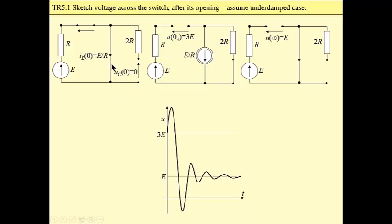For t less than zero, zero minus, our coil is a short circuit, the capacitor is an open circuit, and we may calculate initial condition for coil which is E over R and for capacitor which is zero.